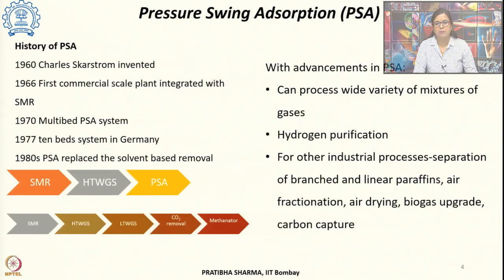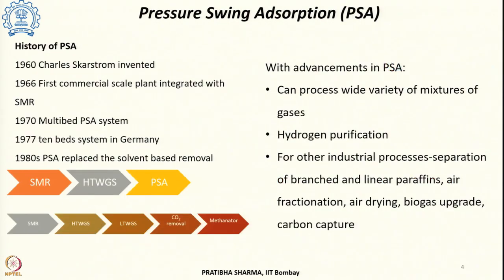The first method, which is most widely used for hydrogen purification, is pressure swing adsorption. In this method, we can get ultra-pure hydrogen — 99.99+ percent purity can be achieved. With modern pressure swing adsorption plants, even 90% hydrogen recovery could be achieved.